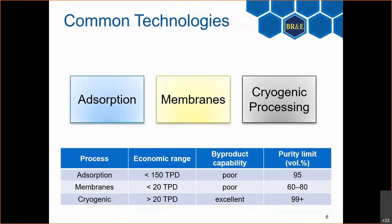Cryogenic processing allows production of almost pure oxygen, nitrogen, and argon — something the other two technologies typically cannot do. In terms of purity limits, cryogenic processing yields the highest purities, while adsorption tops out around 95% and membranes typically around 60%. For some active transport membranes, purity can be higher, but that's the typical range. The purity limit referenced here is related to oxygen.